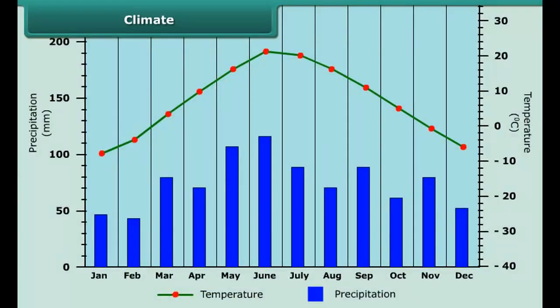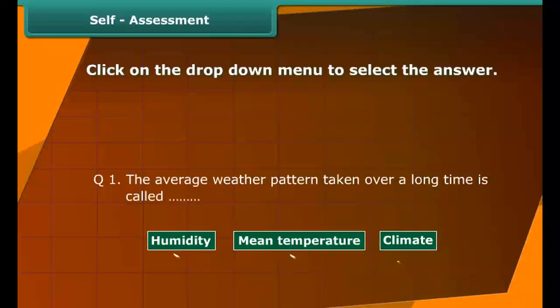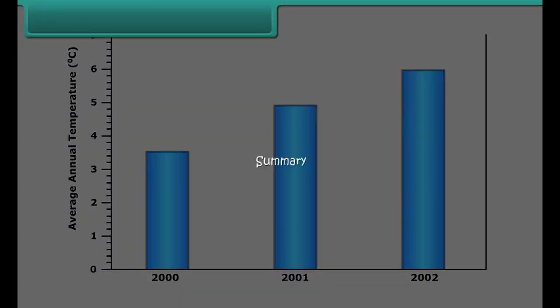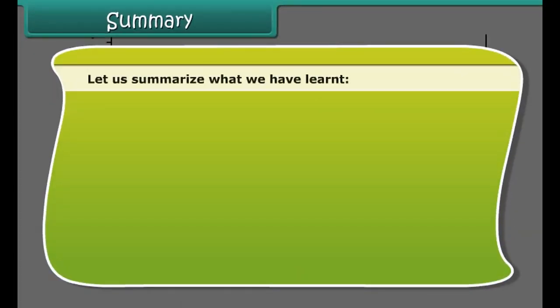For recording climate conditions, the mean temperature of a given month for a particular place is found in two steps. First, the average of the temperatures recorded during the month is calculated.